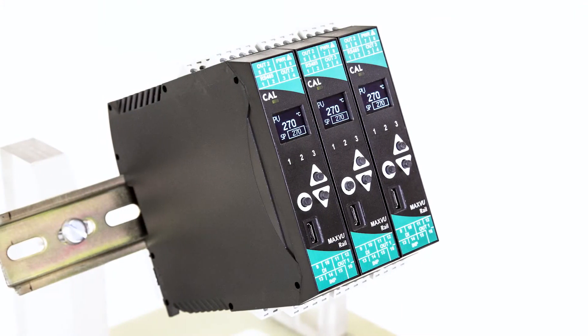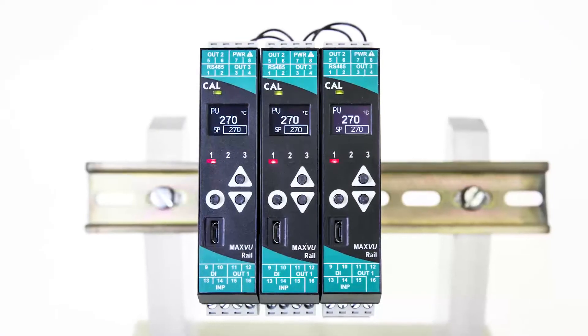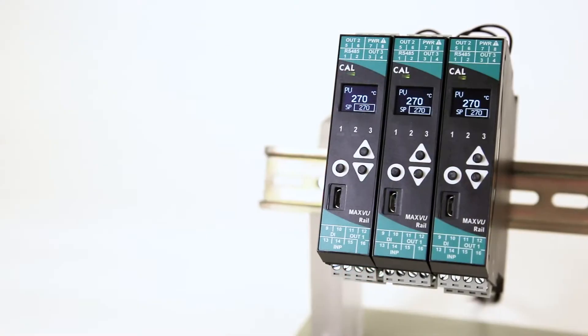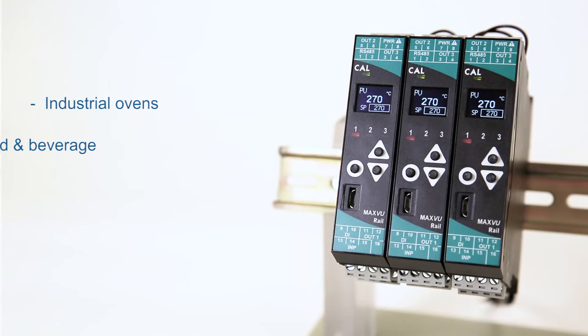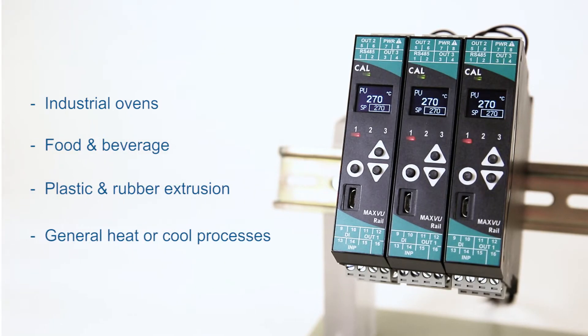Based on our popular MaxView panel mount controller, the new DIN Rail version is an affordable controller, limiter or transmitter suitable for many industrial and laboratory applications.